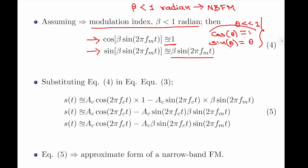Please note these trigonometric approximations are used to deduce the solutions. Substituting the values for cos(β·sin(2π·fm·t)) and sin(β·sin(2π·fm·t)) into equation 3, it reduces to s(t) ≈ ac·cos(2π·fc·t) · 1 − ac·sin(2π·fc·t) · β·sin(2π·fm·t), which simplifies to ac·cos(2π·fc·t) − ac·β·sin(2π·fc·t)·sin(2π·fm·t).